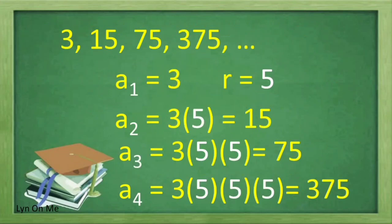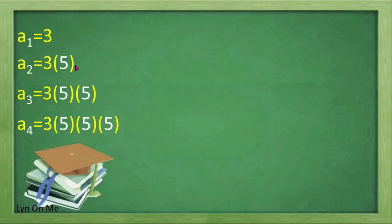Now let's have this set of numbers: 3, 15, 75, 375, and so on. Our first term is 3 and our common ratio is 5. To find the second term, we multiply our first term by the common ratio and that is equal to 15. To find the third term, we multiply the second term by the common ratio — that is 3 times 5 times 5 — equal to 75. This is expressed as A sub 2 equals A sub 1 times R.